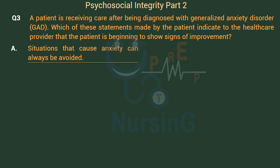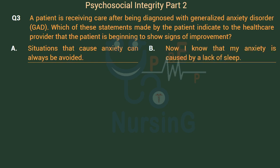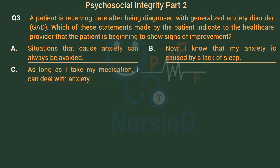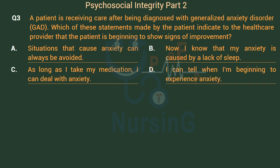Option A: Situations that cause anxiety can always be avoided. Option B: Now I know that my anxiety is caused by a lack of sleep. Option C: As long as I take my medication, I can deal with anxiety. Option D: I can tell when I'm beginning to experience anxiety.